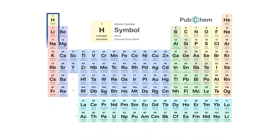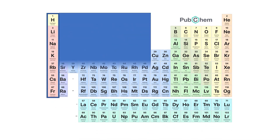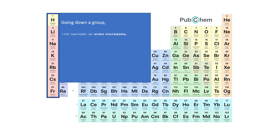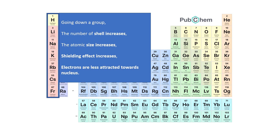Now let's look at the trend down a group. As we go down a group, the number of shells increases. Therefore, the atomic size increases. As a result, the shielding effect will also increase. However, the electrons will experience less attraction towards the nucleus. So the ability of an atom to attract electrons decreases.